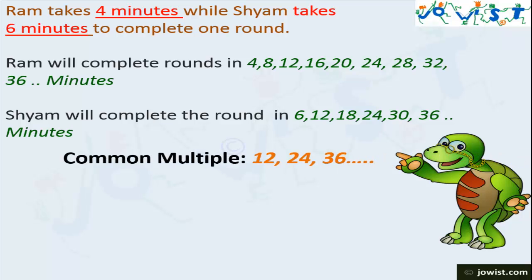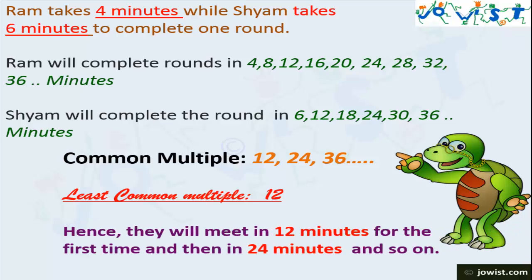Here, the common multiples are 12, 24, 36 and so on. As 12 is the first common multiple, therefore 12 is also least common multiple. Hence, they will meet in 12 minutes for the first time and then in 24 minutes and so on.